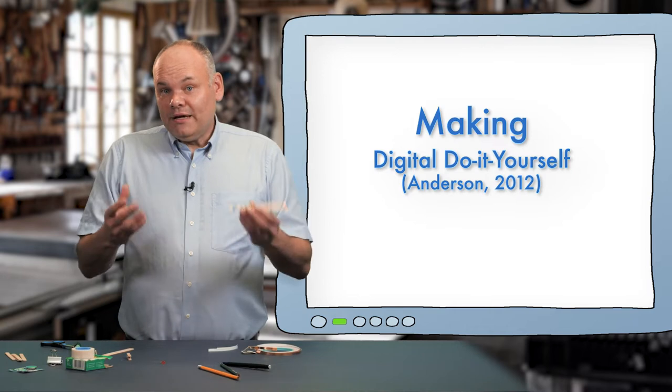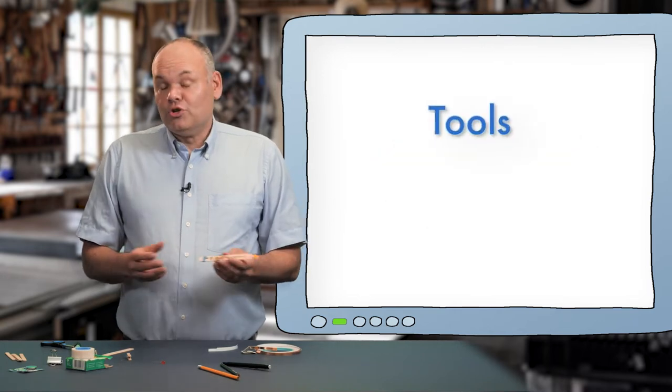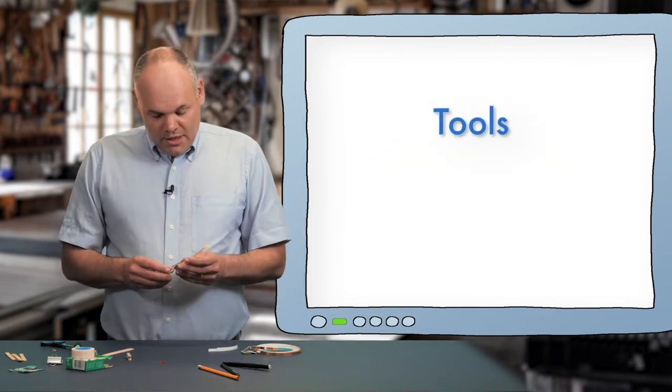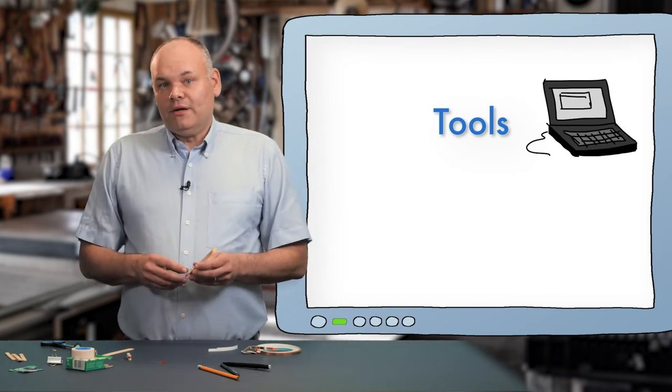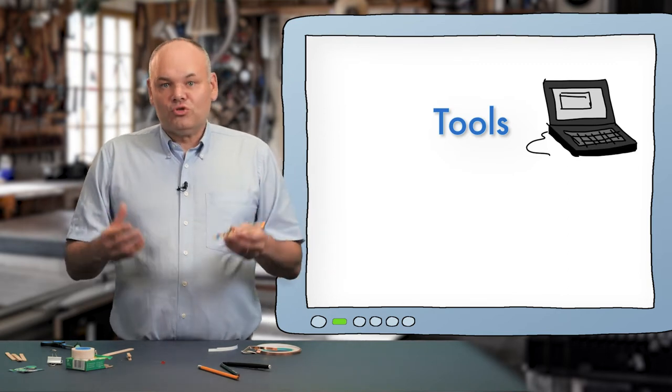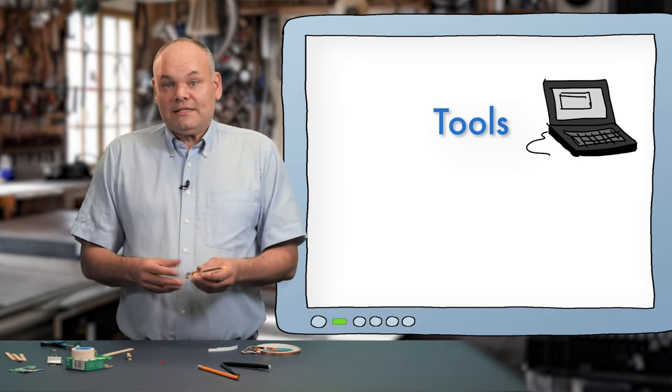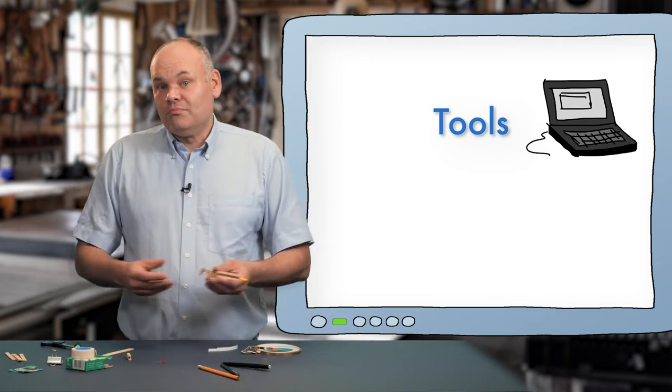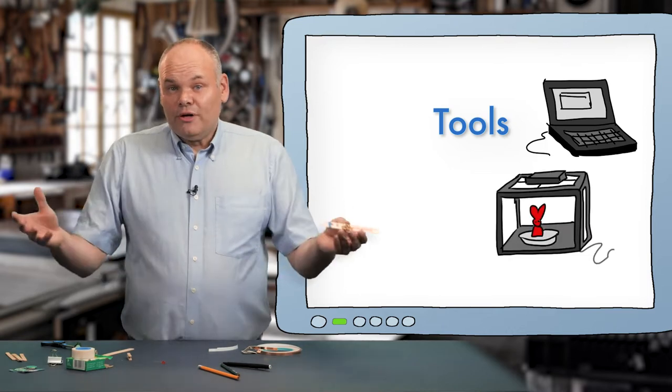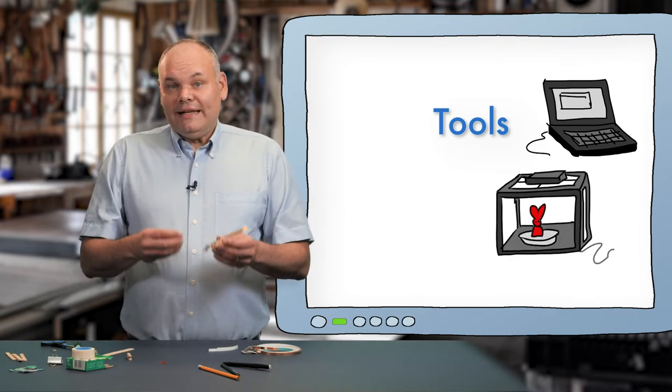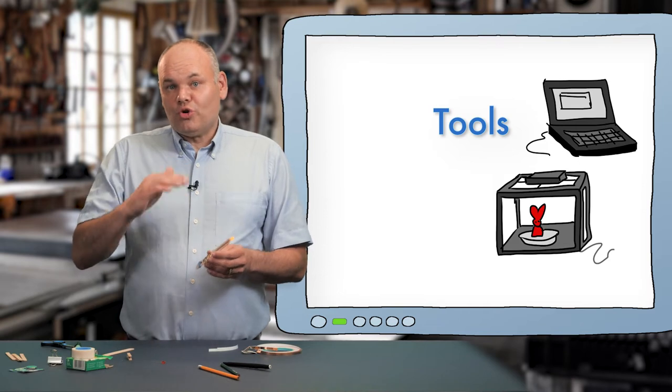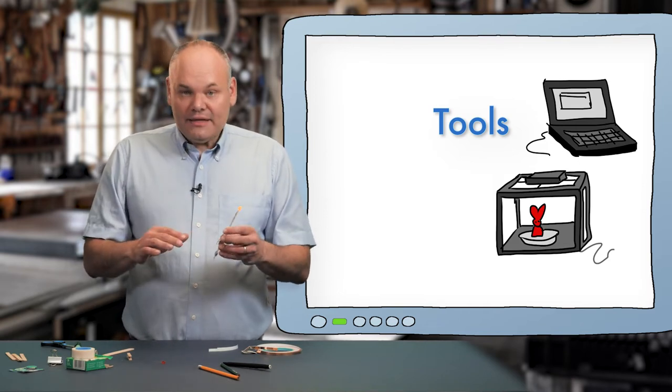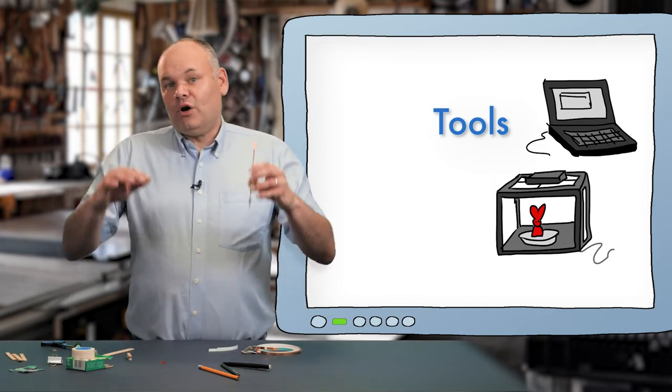Beim Making kommen grundsätzlich ganz unterschiedliche Tools zum Einsatz. So sind beispielsweise Programmierumgebungen oder eine 3D-Konstruktionssoftware am Computer oder ganz allgemein das Internet als Ideenressource und zum Erfahrungsaustausch geeignet. Beim 3D-Drucker wird auf Basis eines digitalen 3D-Modells meist Kunststoff geschmolzen und das Objekt dann Schicht für Schicht aufgebaut.